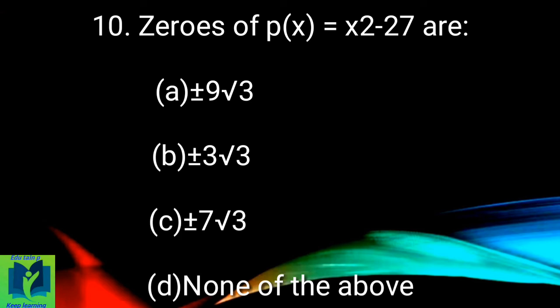Zeros of p(x) = x² - 27 are: (a) ±9√3, (b) ±3√3, (c) ±7√3, (d) none of the above.